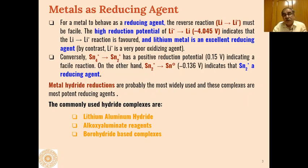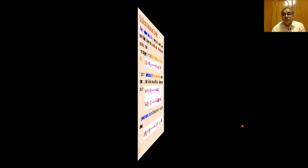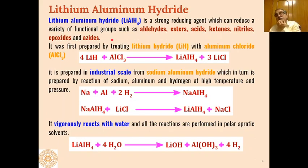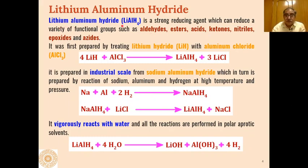In this lecture we will discuss mainly lithium aluminum hydride, which is a strong reducing agent that can reduce aldehydes, esters, carboxylic acids, ketones, nitriles, epoxides, and azides — mostly unsaturated compounds. These add hydrogen across their unsaturated bonds and get reduced with LAH. Lithium aluminum hydride is prepared by reaction of lithium hydride with anhydrous aluminum chloride to give LAH and lithium chloride.